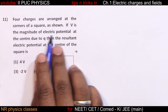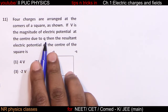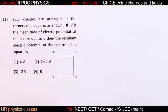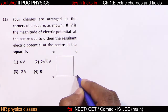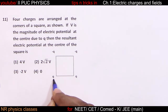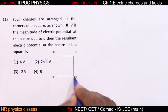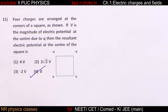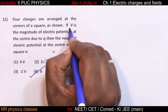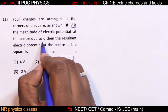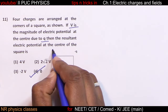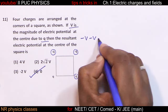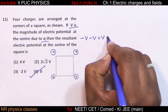Four charges -Q, -Q, Q, Q at corners of a square: if V is the magnitude of electric potential at the center due to Q, find the resultant electric potential. Net charge = Q + Q - Q - Q = 0. Therefore resultant potential is zero. Because of -Q: -V, -Q: -V, Q: +V, Q: +V — resultant is zero.